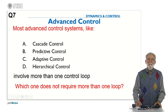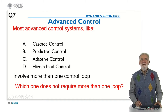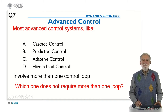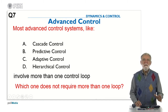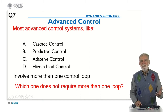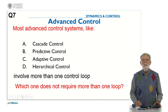Hello again, back to the last question in this module 4. We are trying to figure out which one of these advanced control systems doesn't require more than one loop. For that purpose we are going to review the general structure of these advanced control systems.